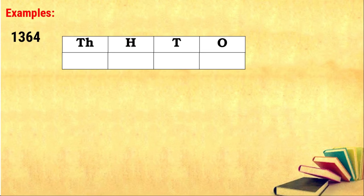So four should be placed in the ones digit, six should be in the tens place, three should be in the hundreds place, and one should be in the thousands place. Now we are going to find the place value for these numbers.